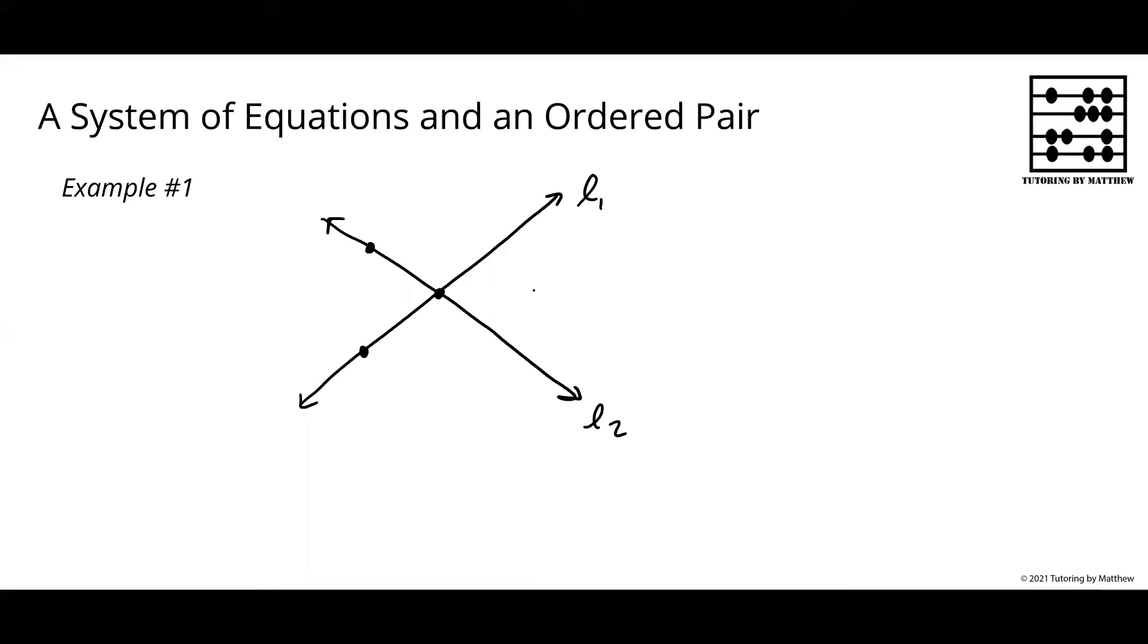Now consider a point that could be in any other position that is neither on line one nor on line two. This is not a solution to the equation for line one and it's not a solution to the equation for line two.